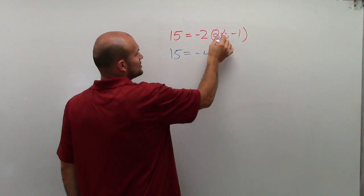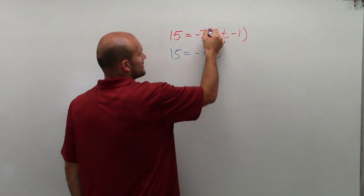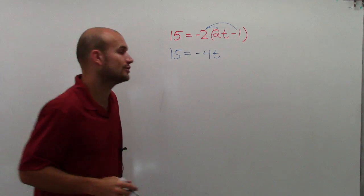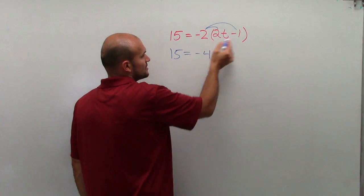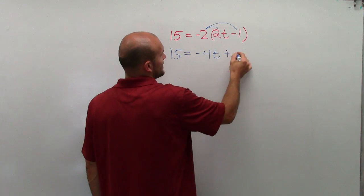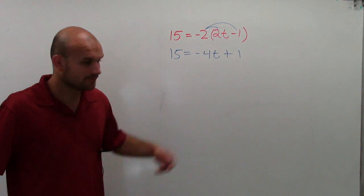So negative 2 times 2t is a negative 4t. And then remember, distributive property you have to distribute to both terms inside your parentheses. So therefore, the negative 2 times 1 is a positive 1.